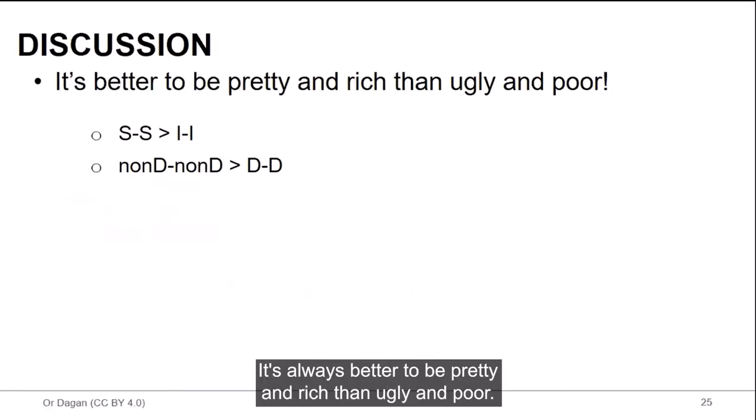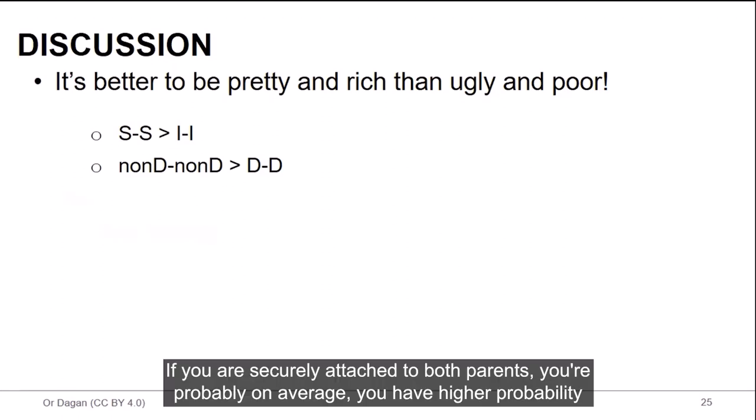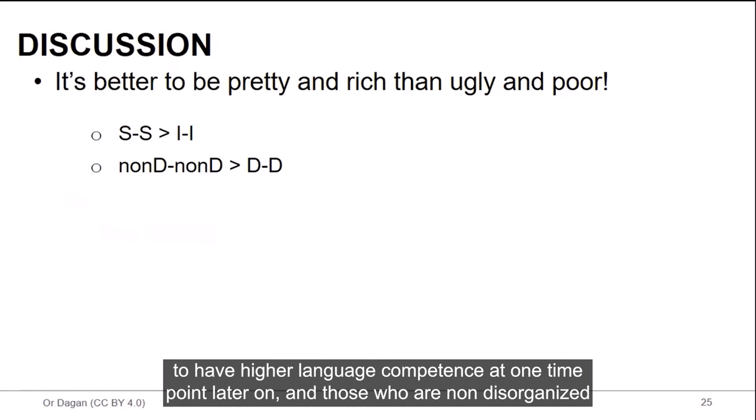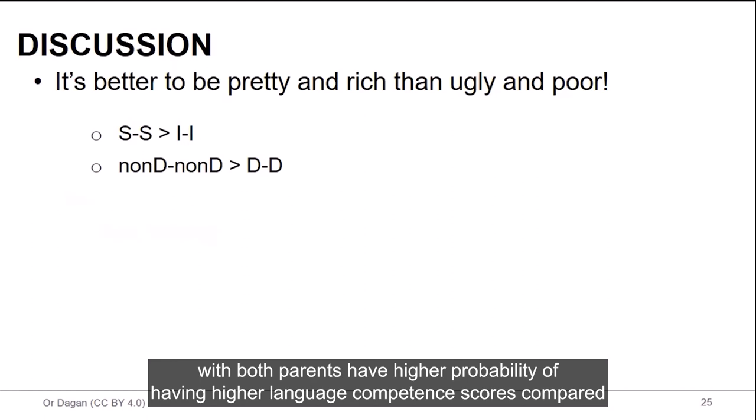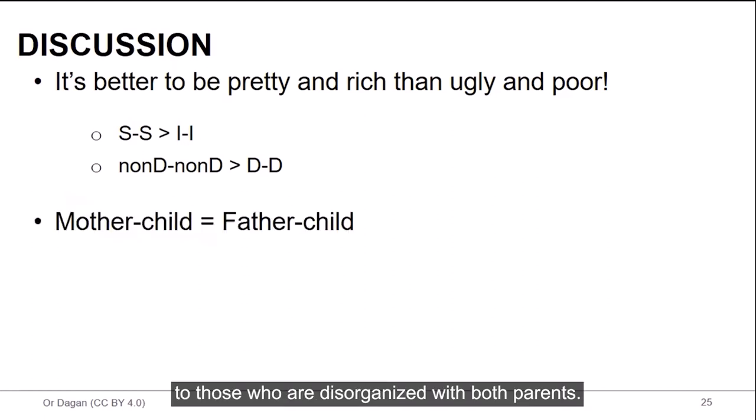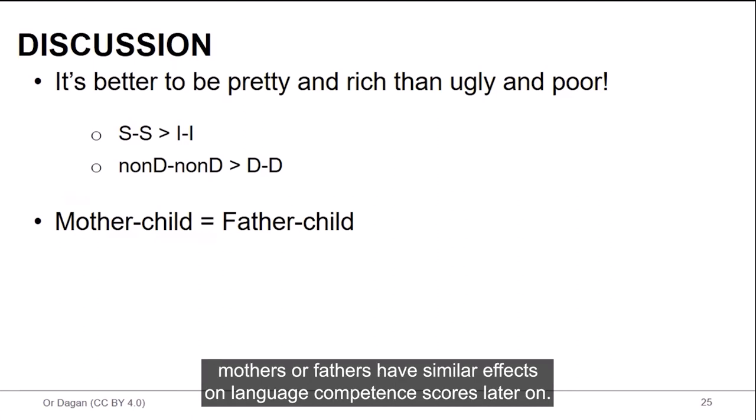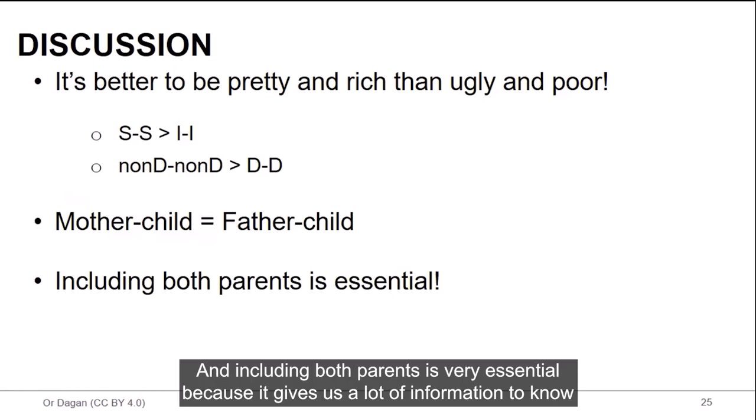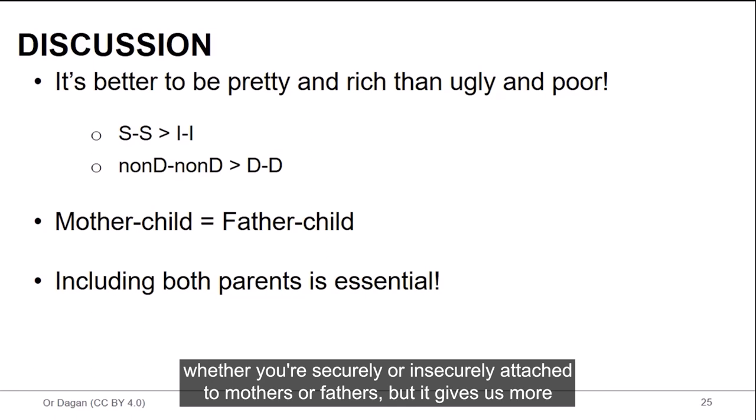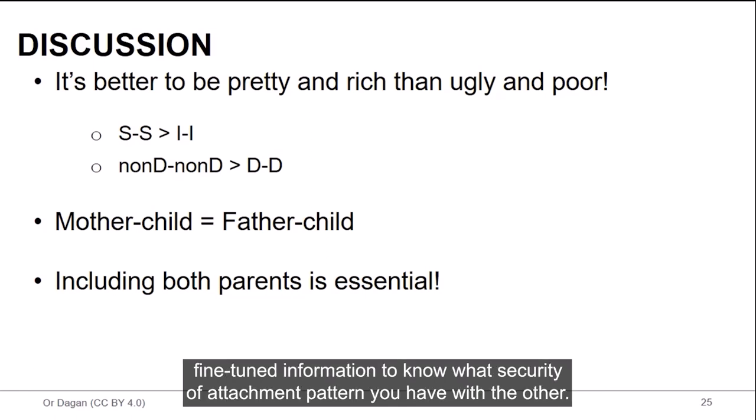So quick discussion. It's always better to be pretty and rich than ugly and poor. If you are securely attached to both parents, you're probably on average, you have higher probability to have higher language competence at one time point later on. And those who are non-disorganized with both parents have higher probability of having higher language competence scores compared to those who are disorganized with both parents. It's highly likely that being securely attached to mothers or fathers or non-disorganized with mothers or fathers have similar effects on language competence scores later on. And including both parents is very essential because it gives us a lot of information to know whether you're securely or insecurely attached to mothers or fathers, but it gives us more fine-tuned information to know what a security of attachment pattern you have with the other parent.